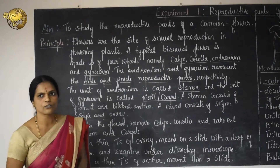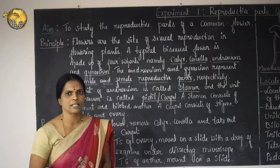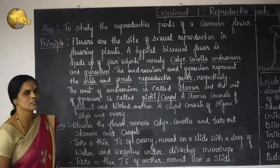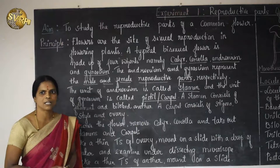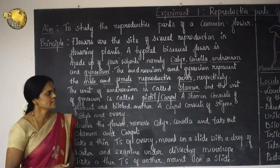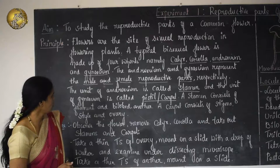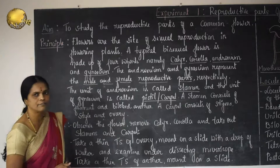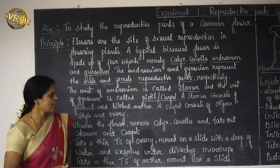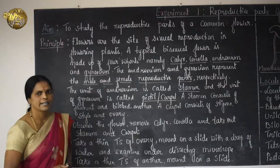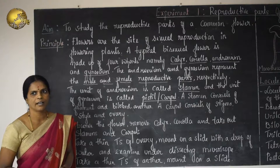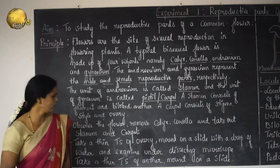The unit of Androecium is called the Stamen and the unit of Gynoecium is called the Pistil or Carpel. A stamen consists of a long slender filament with a bilobed anther, and a carpel consists of stigma, style, and ovary.